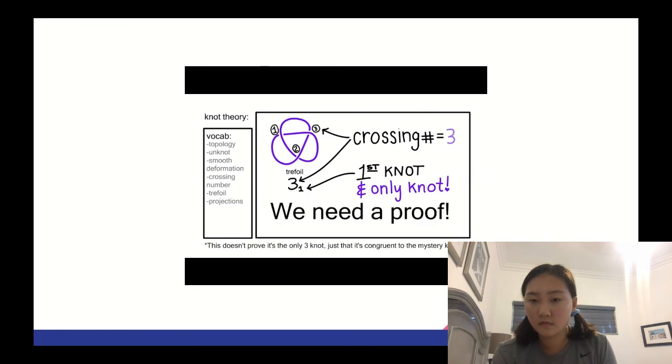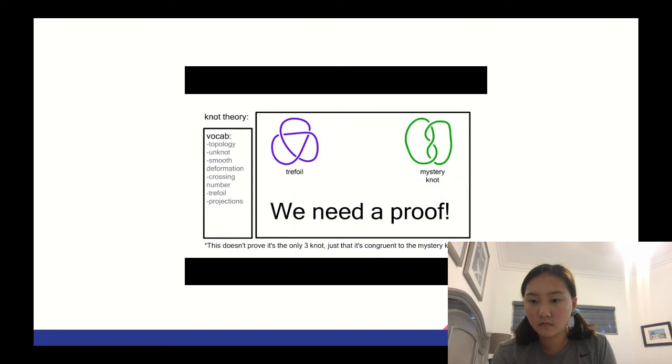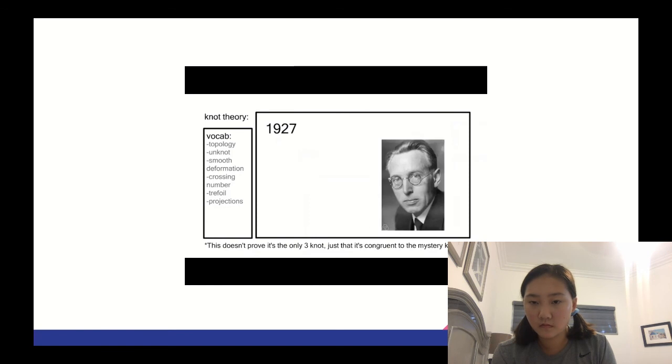But, we need a proof. What about this knot? That would make two, right? How can we tell if they're the same? In 1927, Kurt Reidemeister developed the Reidemeister Moves. Using the idea that you can stretch, bend, and twist, he identified three moves that can tangle or untangle knots.